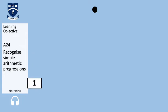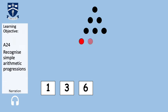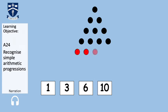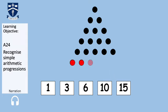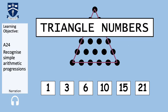Let's have a look at that forming. We have 1 dot, add 2 at the bottom — get a triangle with 3 dots. Add 3 at the bottom — we get a triangle with 6 dots. Add 4 at the bottom — we get a triangle with 10 dots. And you go from 10 to 15 by adding 5 dots, then to 21 by adding 6 dots. So these are the first 6 triangular numbers, and if we keep going, we get the rest of the triangular numbers.